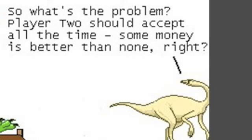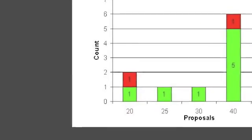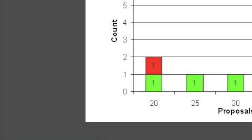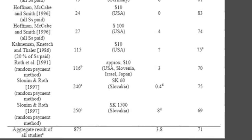But this isn't what people actually do when they play this game. Instead of offering the smallest possible amount, most proposers offer between 40–50% of the money. And on the few occasions that proposers offer less than 30%, responders reject about half of those offers. These findings have been replicated many times in studies all around the world — it's an almost universal pattern. The only odd ones out are people from pre-literate cultures, who are the only people who seem to behave as game theory predicts.